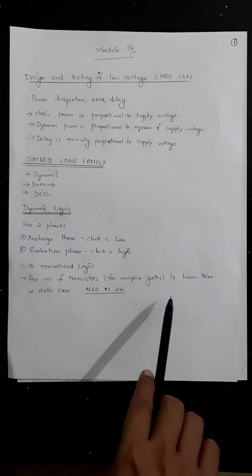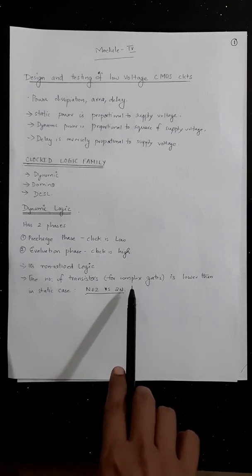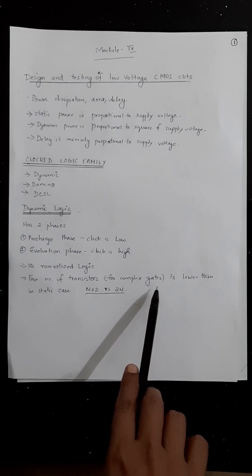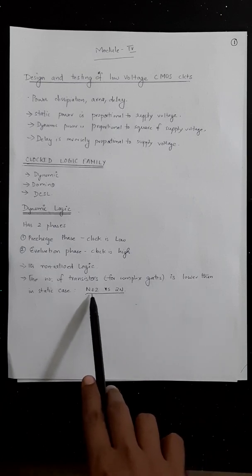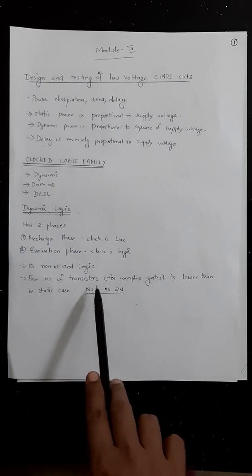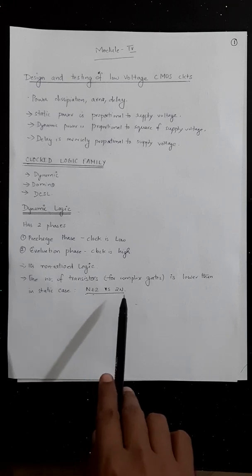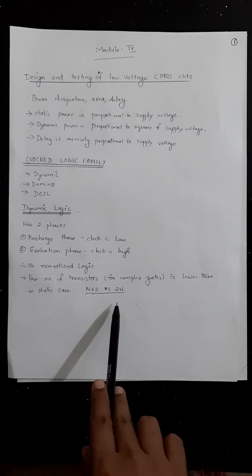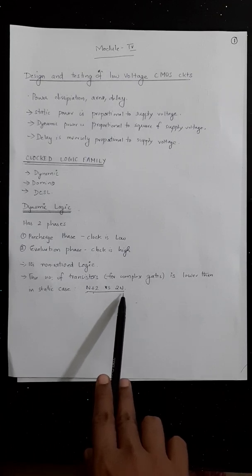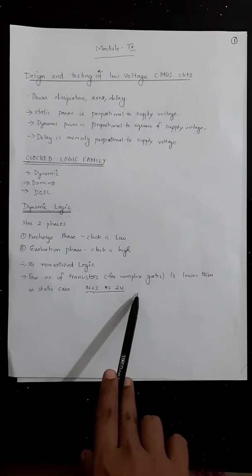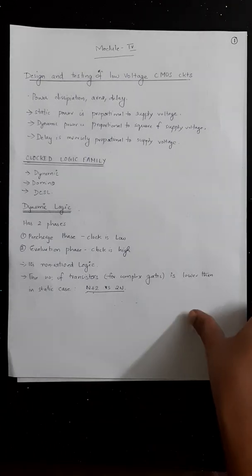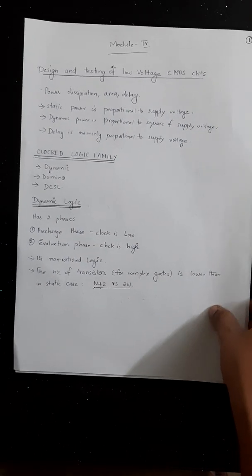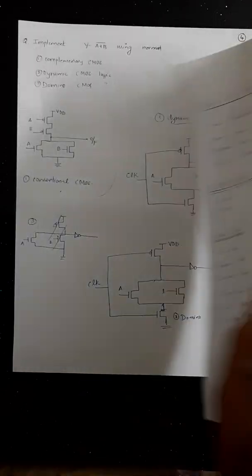In dynamic logic, when you consider complex gates, the number of transistors required is N plus 2, whereas in static or conventional CMOS the number of transistors required is 2N, where N is the number of inputs. Now we'll see how we can draw a dynamic CMOS.